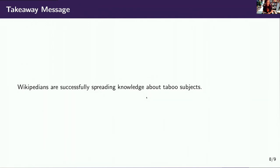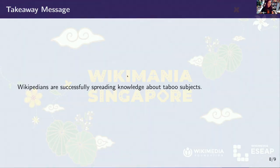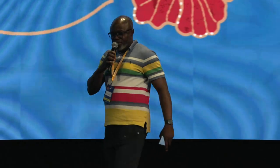The overall takeaway I'm excited to share is that Wikipedians are very successful at spreading knowledge about taboo subjects, despite the social reluctance that might have intervened. Instead, folks are overcoming that and making these great quality articles. That was also an interesting and educative session. I think beyond this session, we need to look for the answer to the question of how Wikipedia is dealing with articles around these topics.